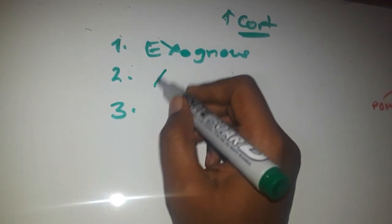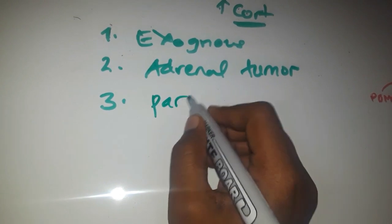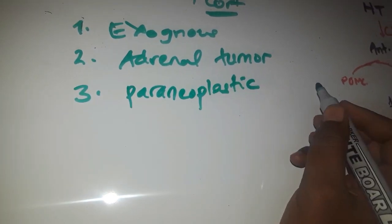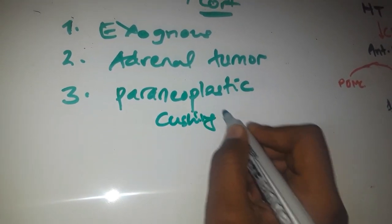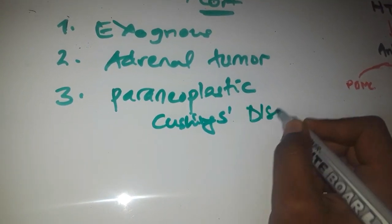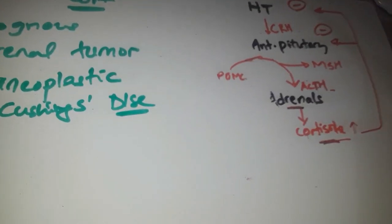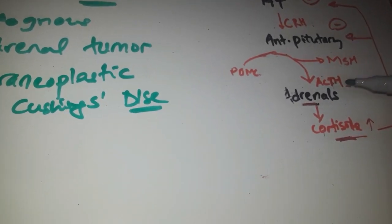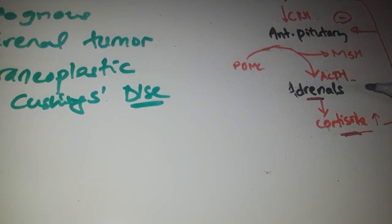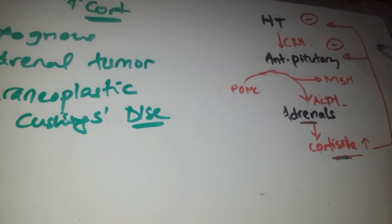The other causes are adrenal tumors — people who have tumors on their adrenal glands secreting cortisol — and paraneoplastic tumors, which stimulate the adrenal glands to secrete cortisol as well. And Cushing's disease, where people have an ACTH-secreting pituitary tumor. The hypothalamus stimulates the anterior pituitary to make ACTH via corticotropin-releasing hormone, and ACTH stimulates the adrenals to make cortisol. Hypercortisolism causes negative feedback inhibition of the anterior pituitary and hypothalamus.